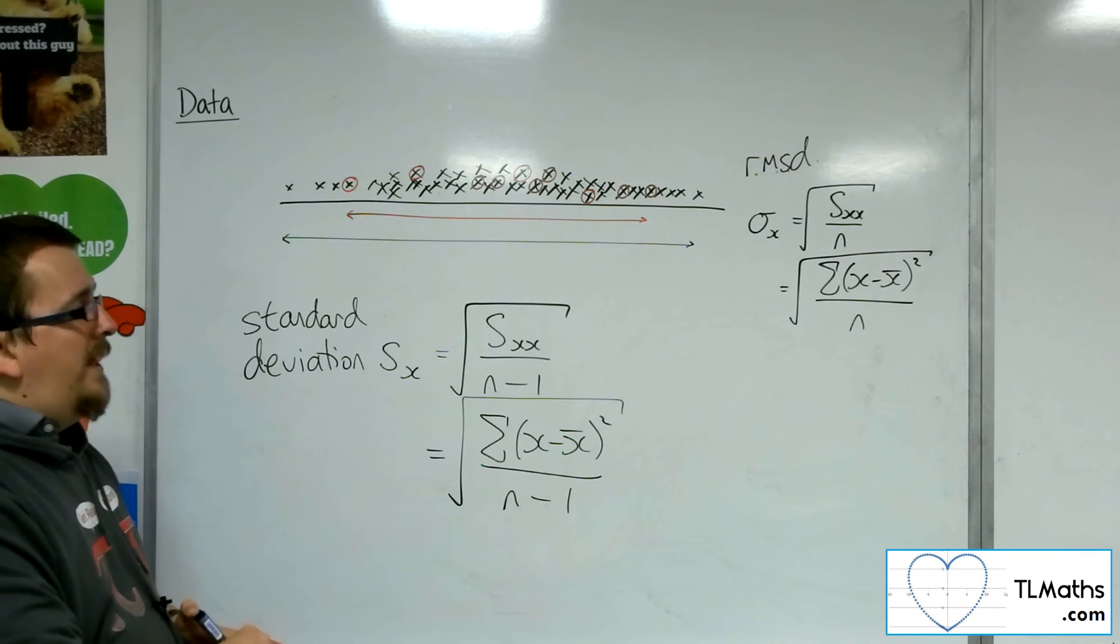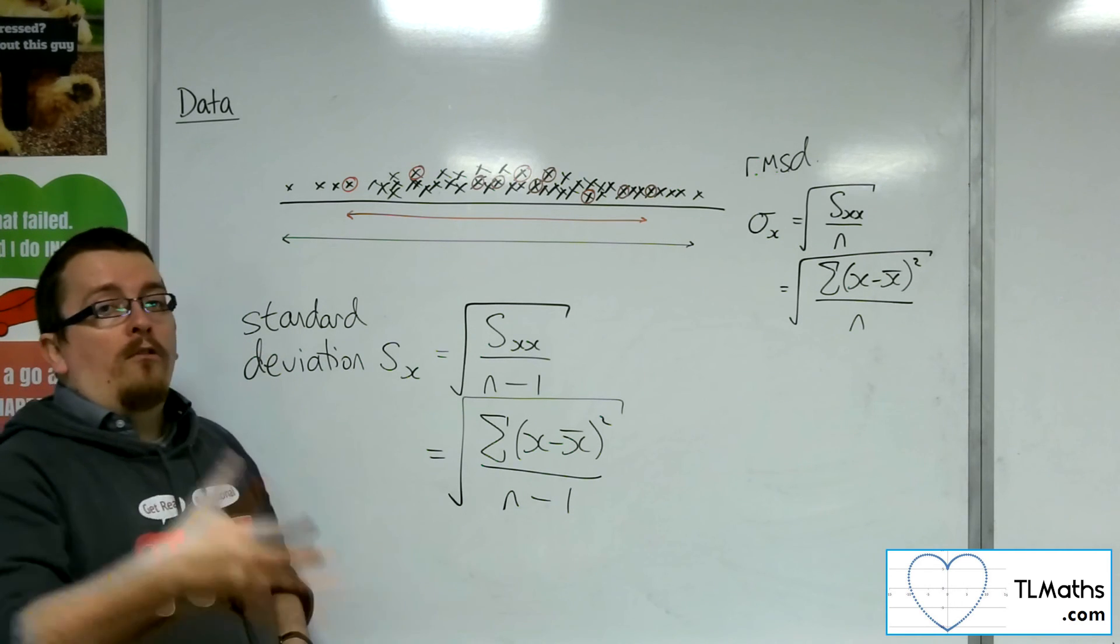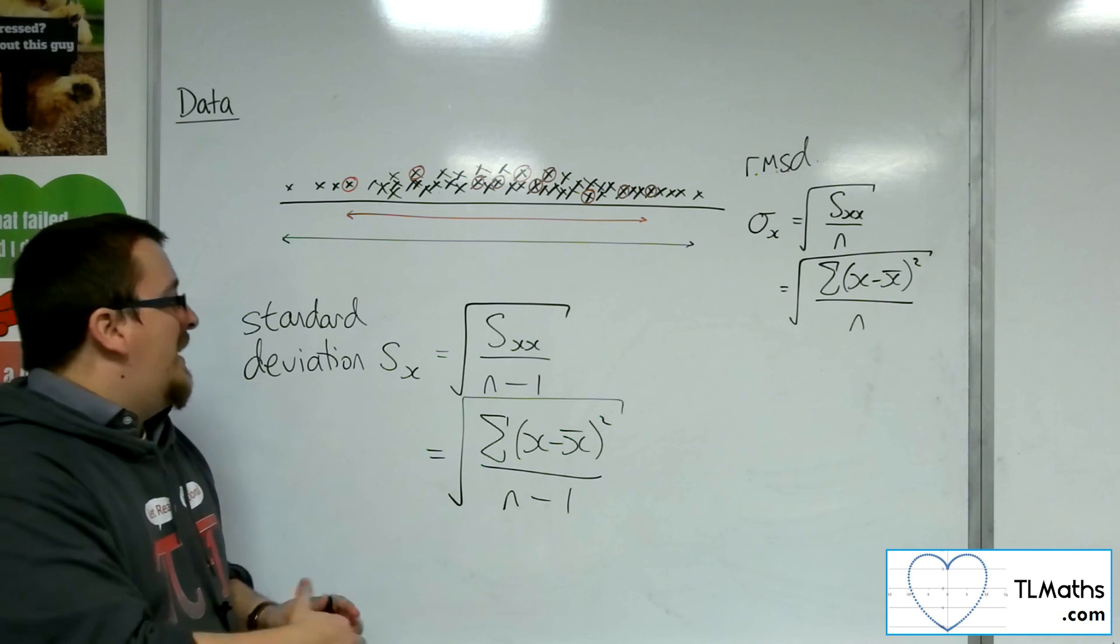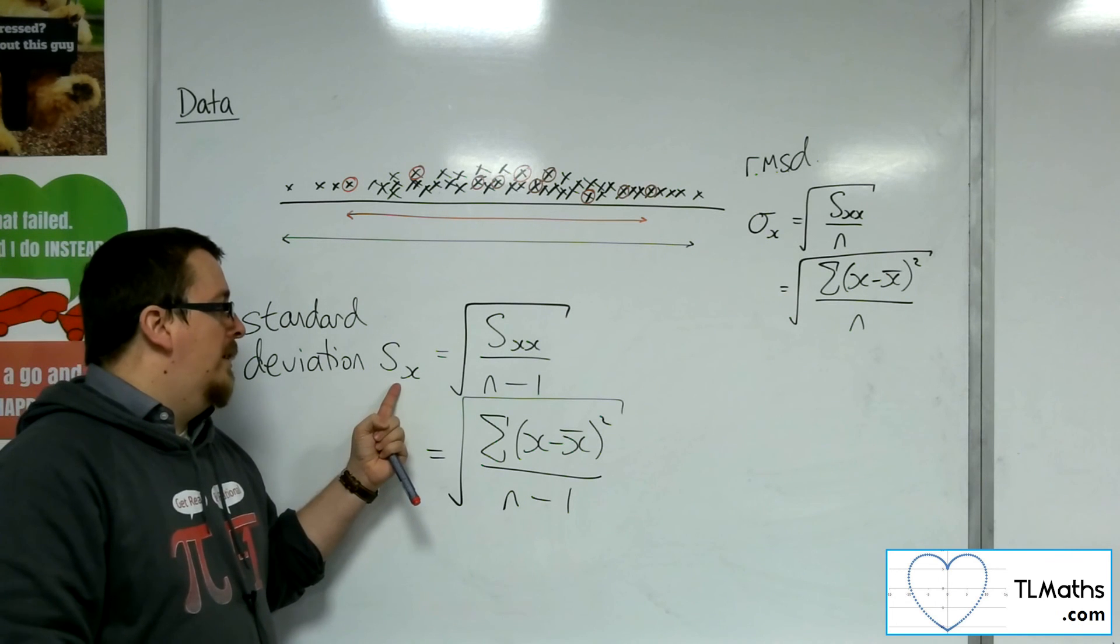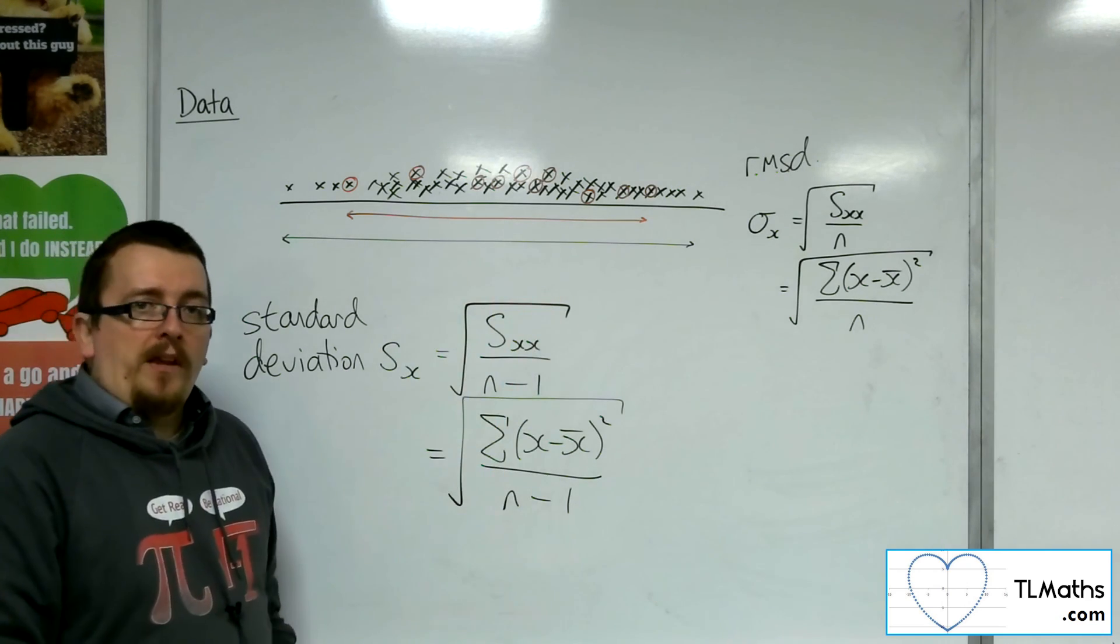But to be clear, when an MEI paper is talking about standard deviation or variance, you are dividing by n-1. So on your calculator, your Casio ClassWiz, you're looking for the SX and not the Sigma X.